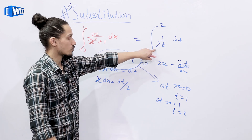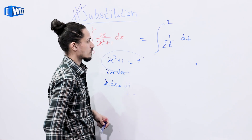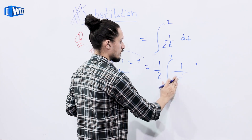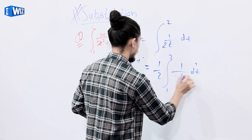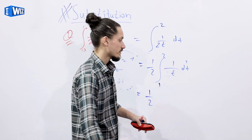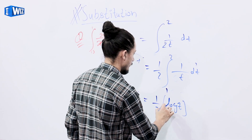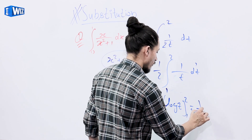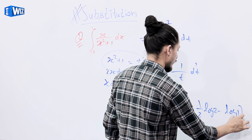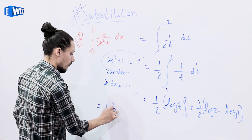Now with the new limits, we solve the integral: 1/2 times integral from 1 to 2 of 1/t dt. Since the integration of 1/t dt equals log of t, we have 1/2 times log(t) from 1 to 2, which equals 1/2 times [log(2) minus log(1)]. Since log(1) equals 0, the final result is 1/2 log(2).